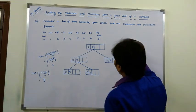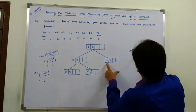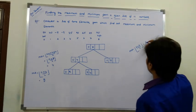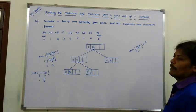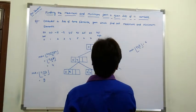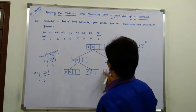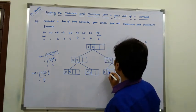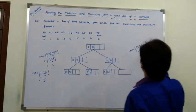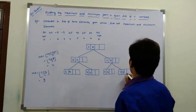For the right sublist [5 to 8], mid = floor((5 + 8) / 2) = floor(6.5) = 6. So the first part covers indices 5 to 6, and the second part covers indices 7 to 8.